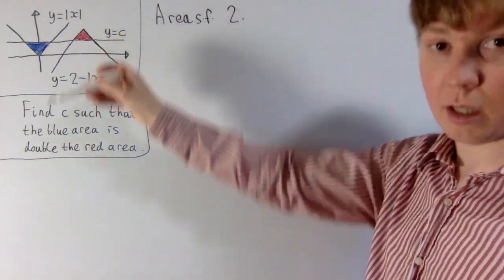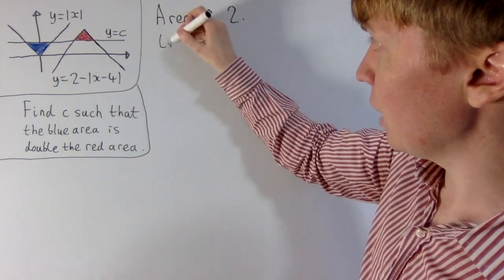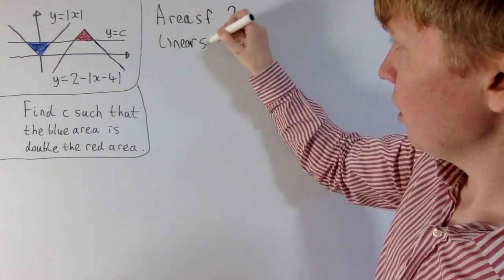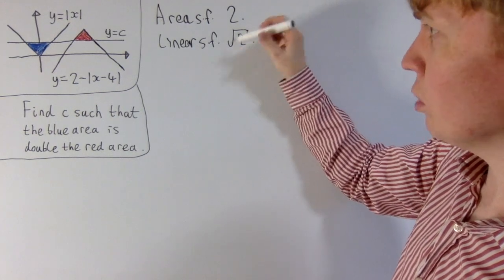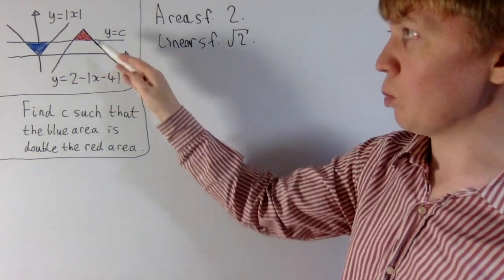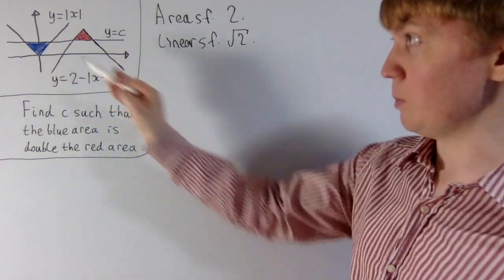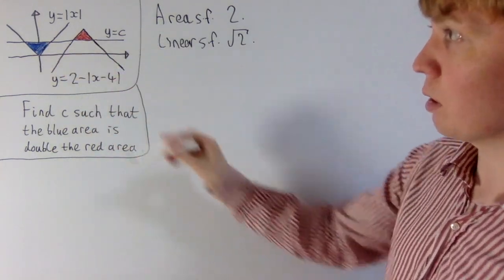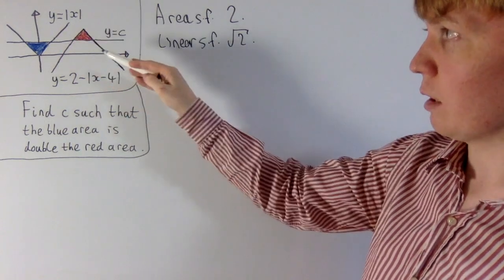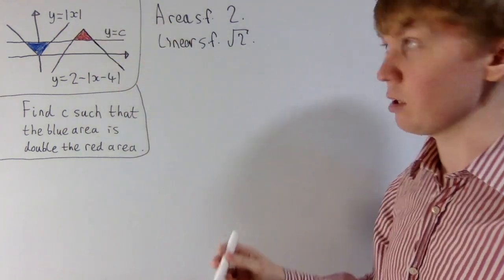Well, your linear scale factor, so the actual scale factor of your enlargement, is going to be the square root of this. So your linear scale factor is root 2. So all of your lengths in the triangle, the height, the width, these are all root 2 times bigger in the blue triangle than they are in the red triangle. So this is really useful because we know what the height of the blue triangle is and we know what the height of the red triangle is in terms of c.